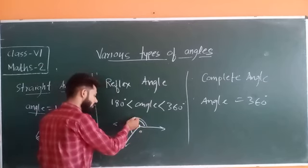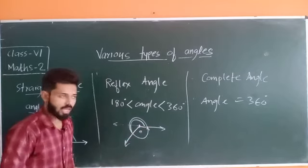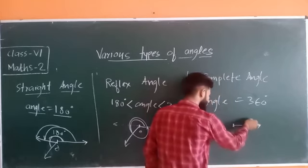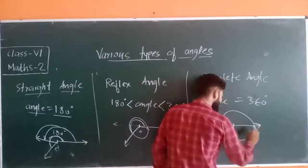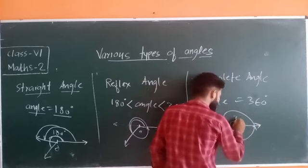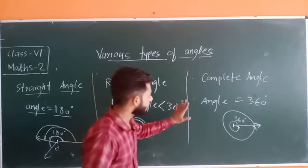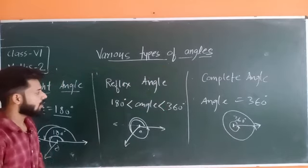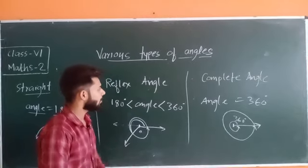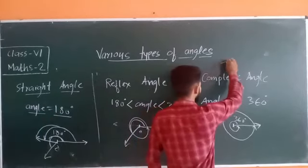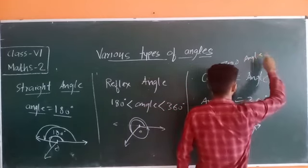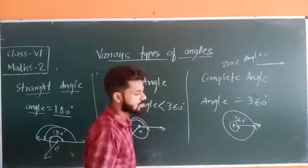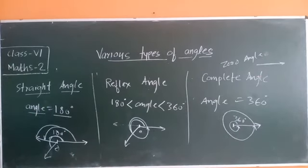A complete angle is when the initial ray rotates completely and reaches its initial point again. This whole rotation is 360 degrees, and if it completes one full rotation, it is known as a complete angle — the angle measurement is 360 degrees. The last type is the zero angle: if the initial and final position are the same, meaning there is no rotation, this is known as a zero angle.